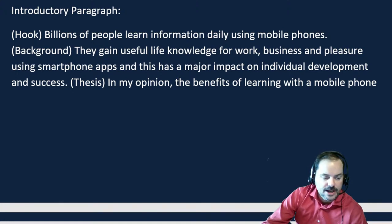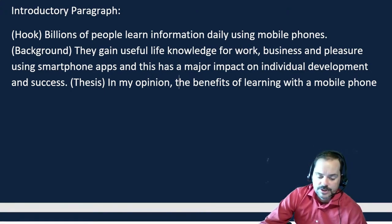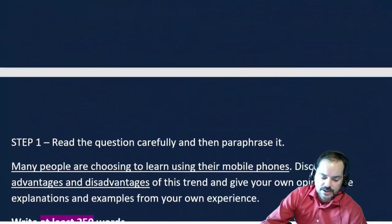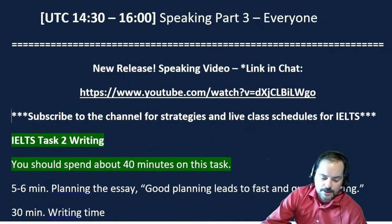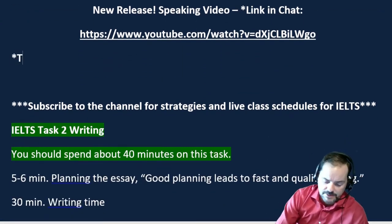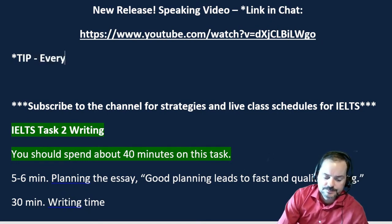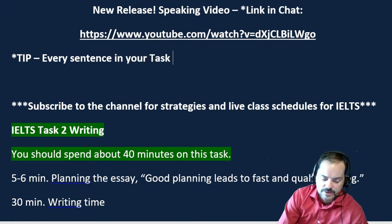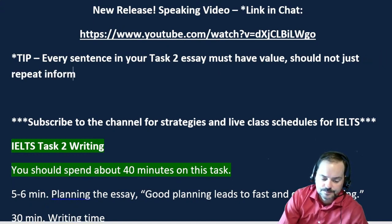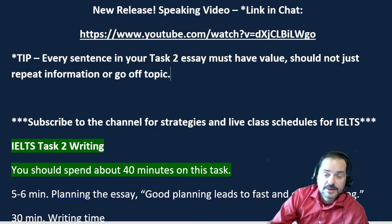Every single sentence in your IELTS Task 2 essay should have purpose. You should never have a sentence that does not have clear purpose and value. For band 7, 8, and 9 essays, every sentence must have value, should not just repeat information, and should not go off topic. Keep that in mind — it's a very important tip.